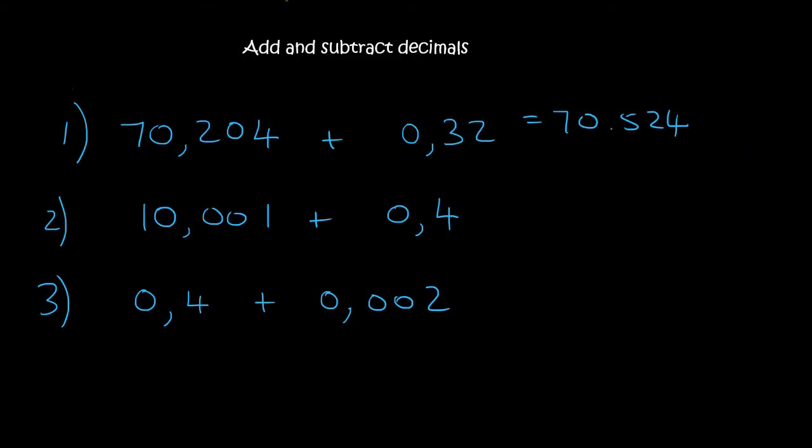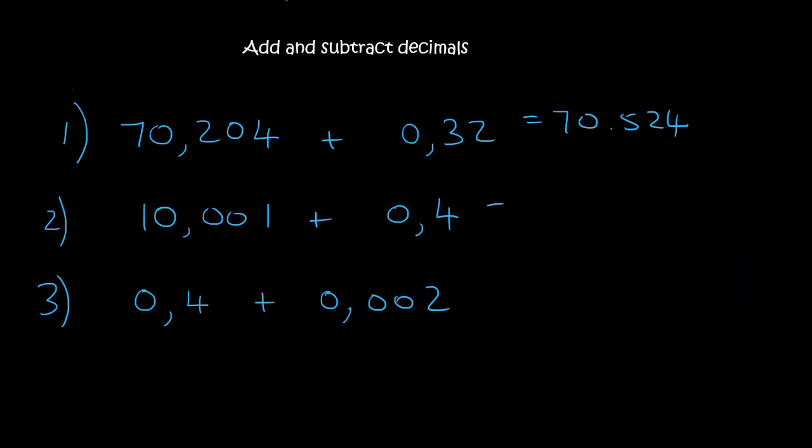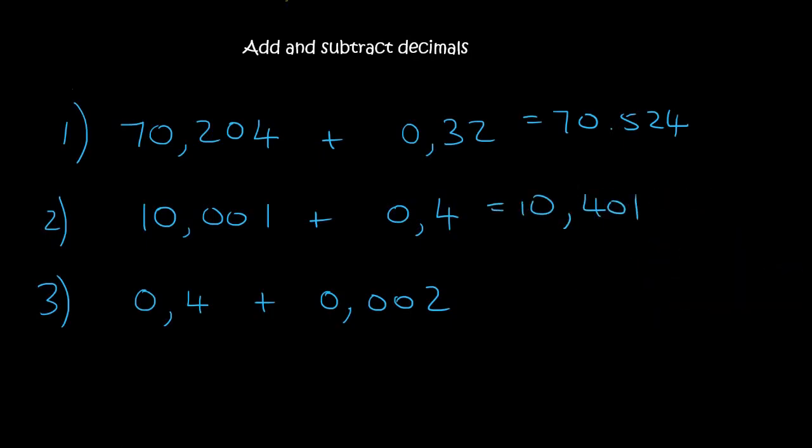The next one is 10.001. So we say 10.001. Now fill in the comma beneath. That's very important. And then it's 0.4. Then if there's any empty spaces, you can use zeros like that. Now we can add 1, 0, 4, 0, and 1. You see, it's quite easy if you just lay it out nicely for yourself. So that one was 10.401.